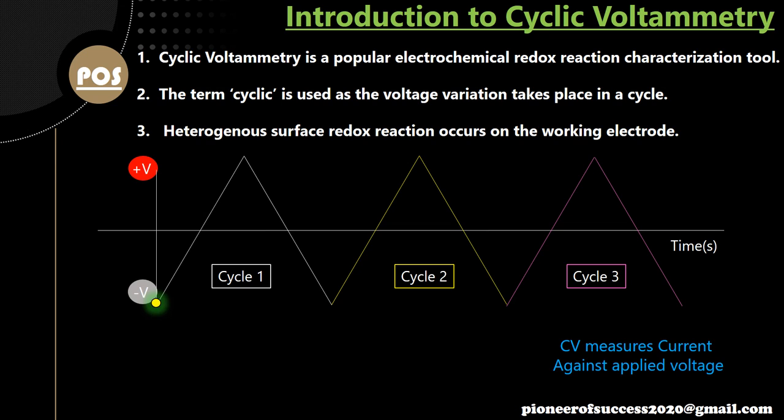Before I proceed with today's content, let me recap the previous lecture a bit. Cyclic Voltammetry is a popular electrochemical characterization tool by which one can study the characteristics of a redox reaction. The redox reaction which we study with Cyclic Voltammetry is basically a heterogeneous reaction that happens on the working electrode surface. The term 'cyclic' stands for the variation of the potential as we apply the voltage across the working electrode and the reference electrode. The voltage starts from a negative value, passes through zero, reaches a positive value, again comes back to negative value, and in each cycle the same thing repeats. I will run the animation once again so you can see how the voltage varies — cycle 1, cycle 2, and cycle 3.